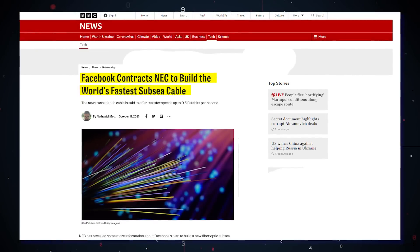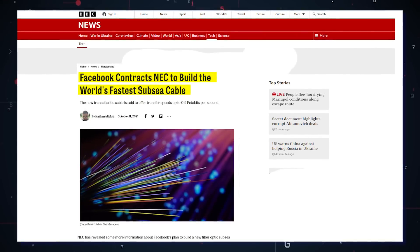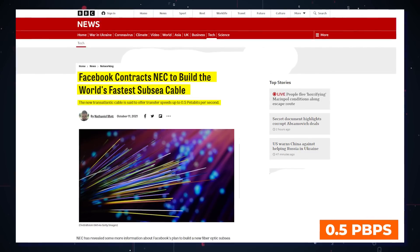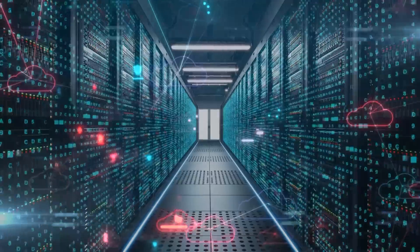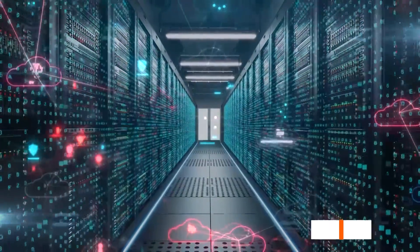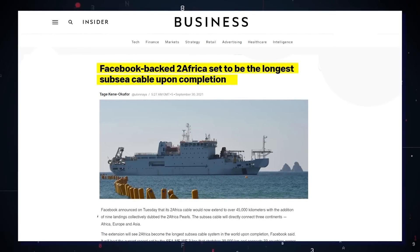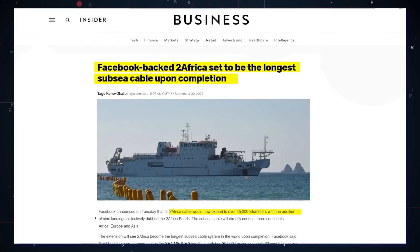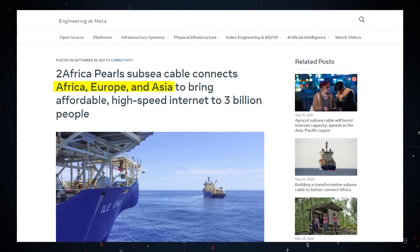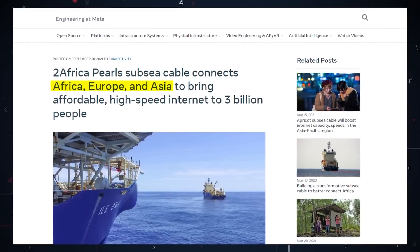As if this was not impressive enough, Facebook, or rather Meta, announced in late 2021 that it is contracting Japanese information technology giant NEC to make a transatlantic cable capable of transmitting at 0.5 petabytes per second. That is 500 terabytes, or 500,000 gigabytes per second. Facebook is also working on the largest subsea cable project in the world, connecting 33 countries in Africa, the Middle East, and Europe, called 2Africa. It will stretch 45,000 kilometers connecting three different continents and has a design capacity of up to 180 terabytes per second at launch.